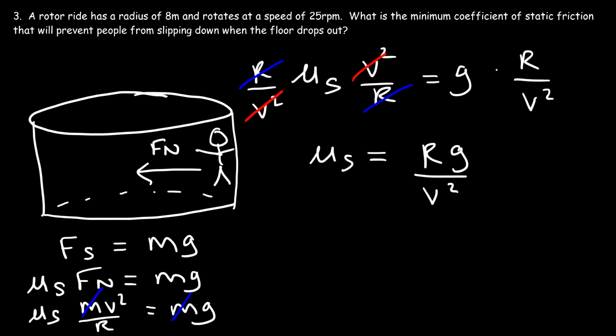We have r and we know g. The only thing we're missing is the speed in meters per second — we have it in rpm, that is revolutions per minute.